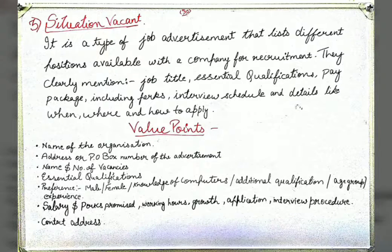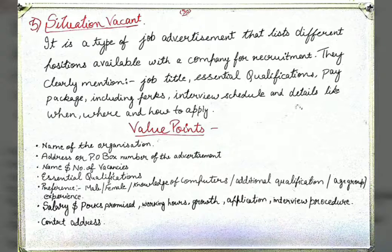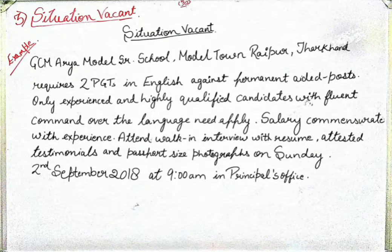You can mention preferences for male or female candidates, computer knowledge, additional qualifications, age group, or experience. Next, mention the salary and perks offered, the working hours, and the growth or increment prospects for the person. Finally, include the application or interview procedure and the contact address. This example of a Situation Vacant advertisement is based on a school teacher position.